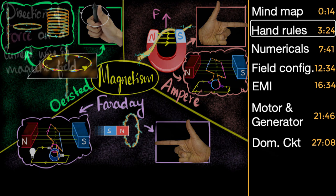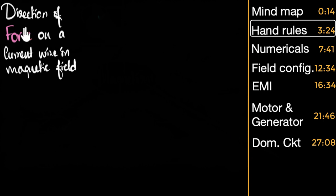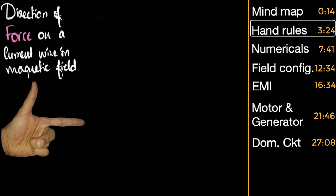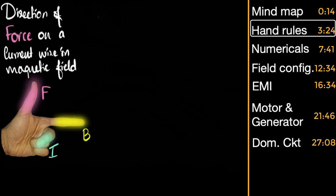Let's start by recalling the hand rules. If you want to figure out the direction of force on a current carrying wire placed in a magnetic field, which hand rule are you going to use? The answer is Fleming's left hand rule. You stretch your fingers so they are perpendicular to each other. The thumb represents the direction of the force; the forefinger gives the direction of the magnetic field B; and the middle finger gives the direction of the current. The way I remember this is FBI — you keep hearing that in Hollywood action movies.